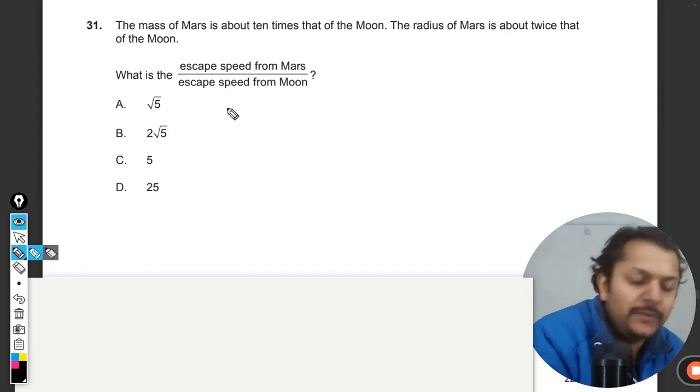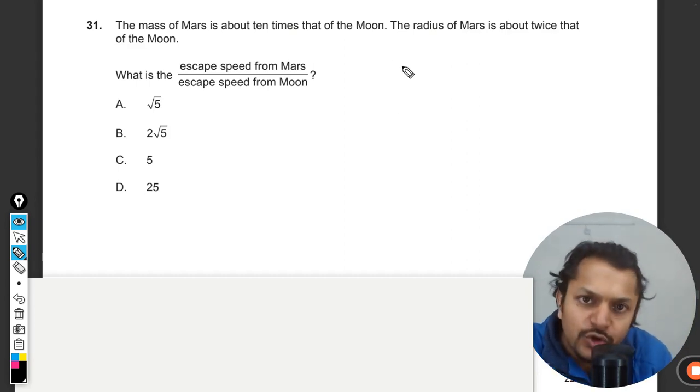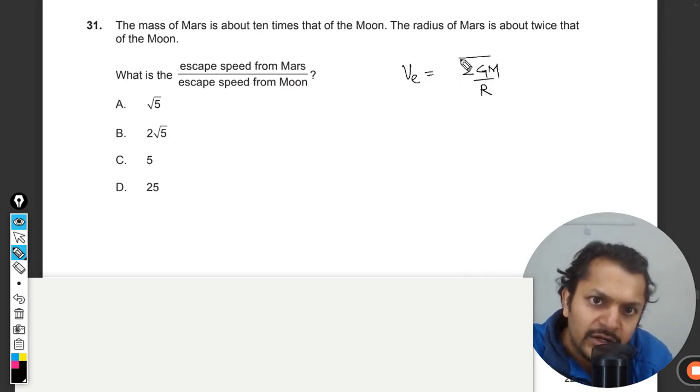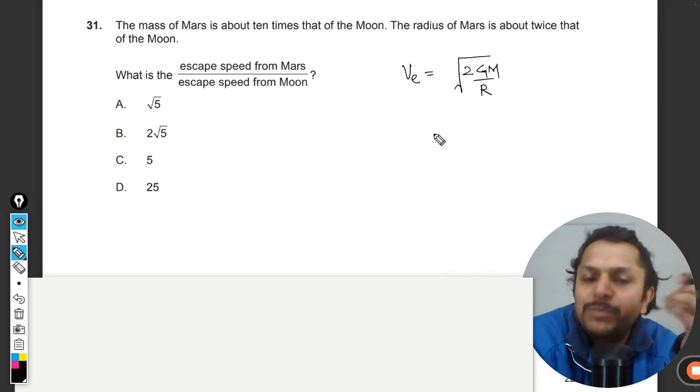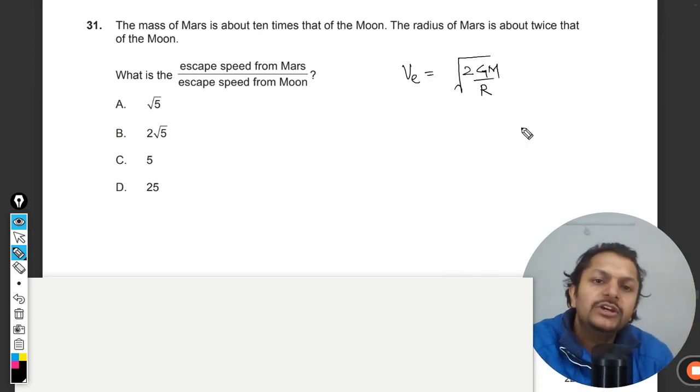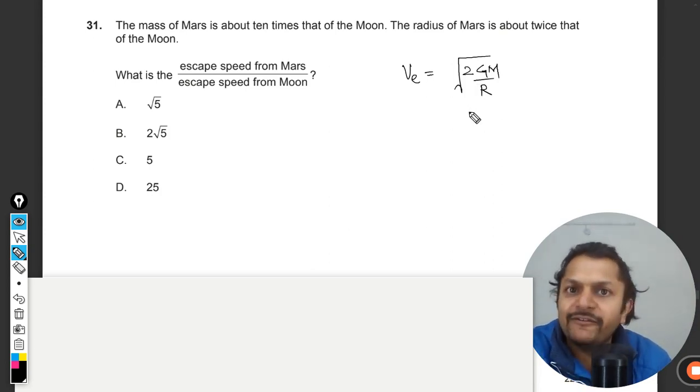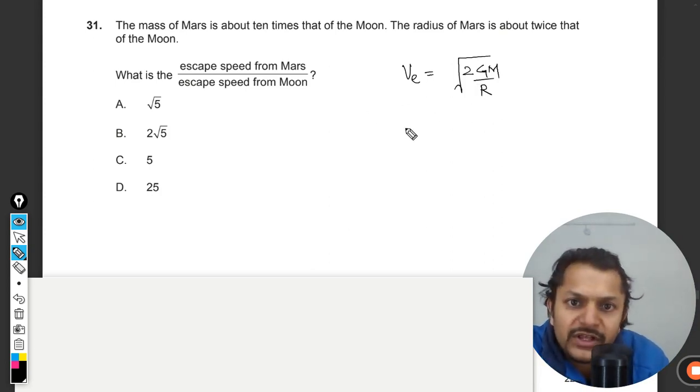First of all, we must know that the formula for escape speed is the square root of 2GM divided by R, where R is the radius of the planet or astronomical object. This is the formula we have for escape velocity.